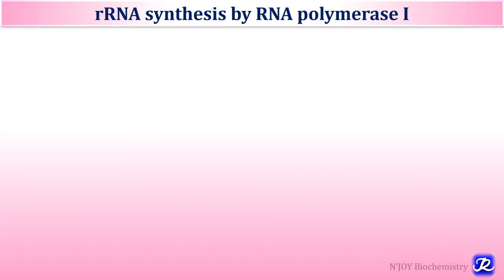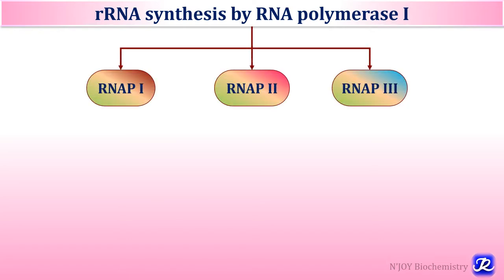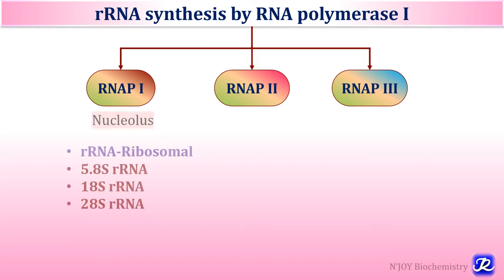In eukaryotes there are three types of RNA polymerase: RNA polymerase 1, RNA polymerase 2 and 3. RNA polymerase 2 is responsible for synthesis of messenger RNA, while RNA polymerase 1 is responsible for synthesis of ribosomal RNA, specifically 5.8S, 18S and 28S ribosomal RNA. 5S ribosomal RNA synthesis occurs with the help of RNA polymerase 3.